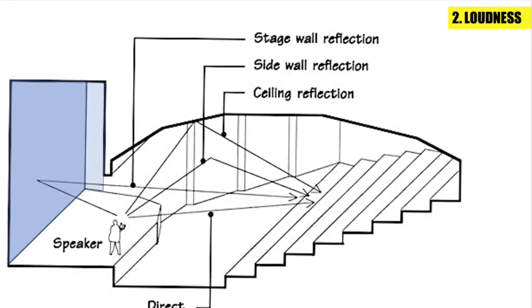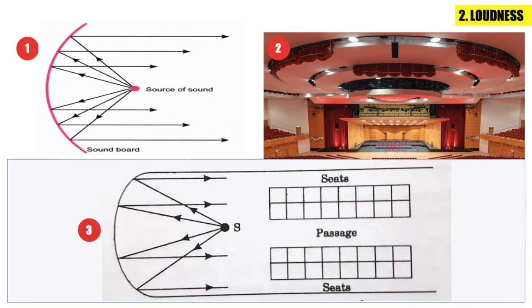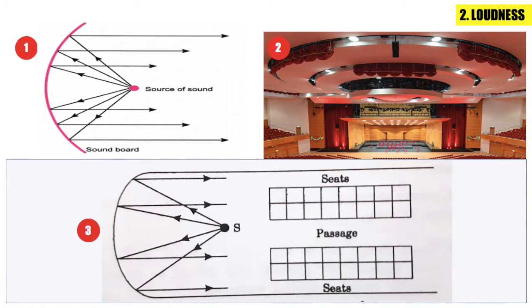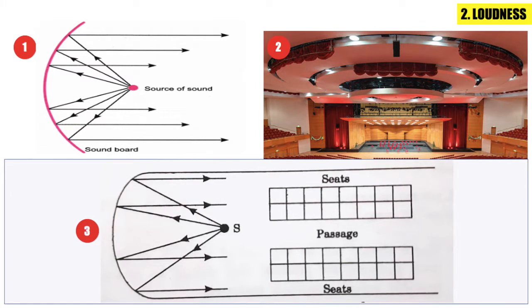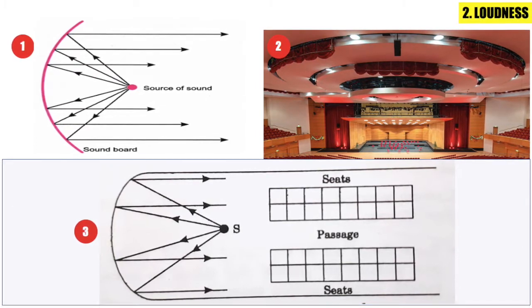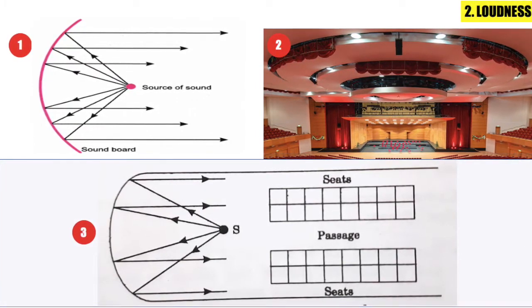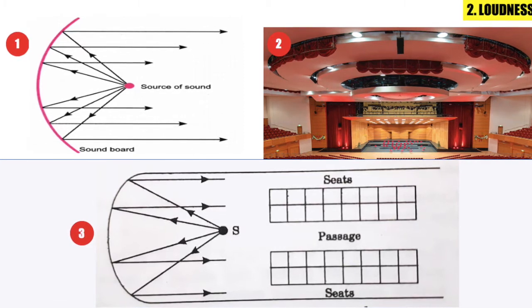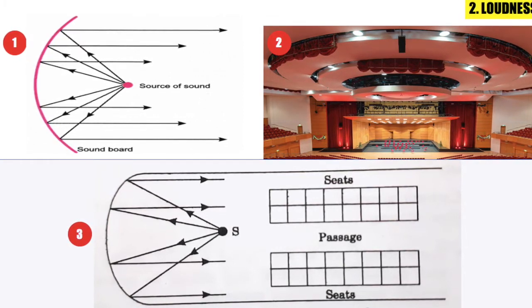The loudness of sound is increased by following ways. One: to achieve good loudness, maximum reflection of sound from the stage is desirable so that there is no loss of sound energy. This can be done by using a large sounding board behind the speaker.